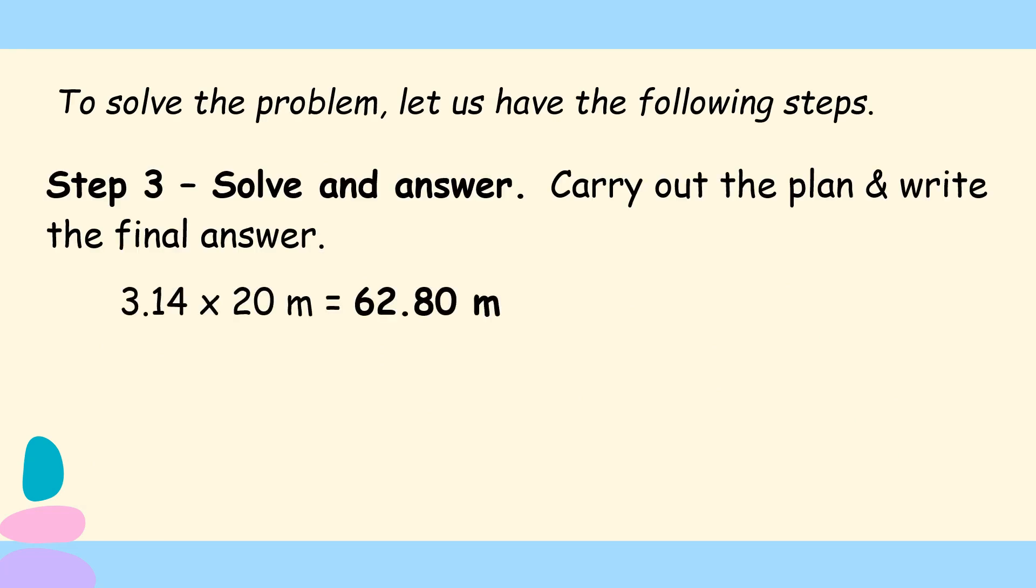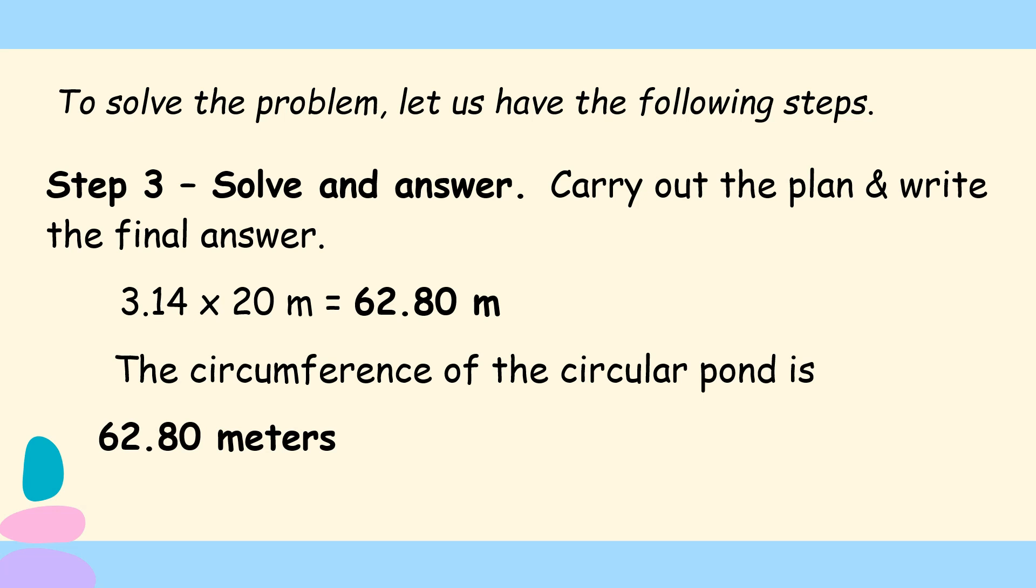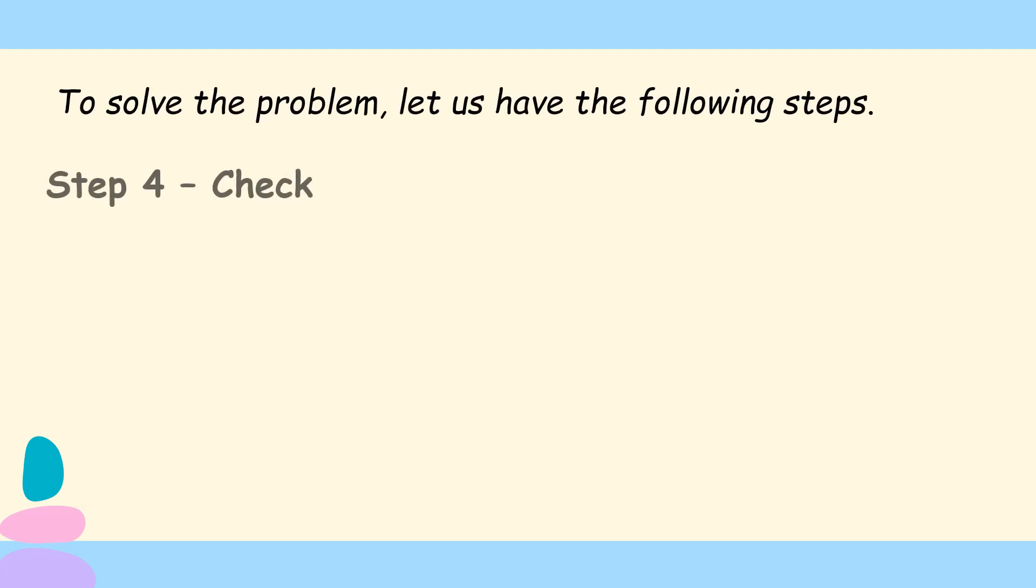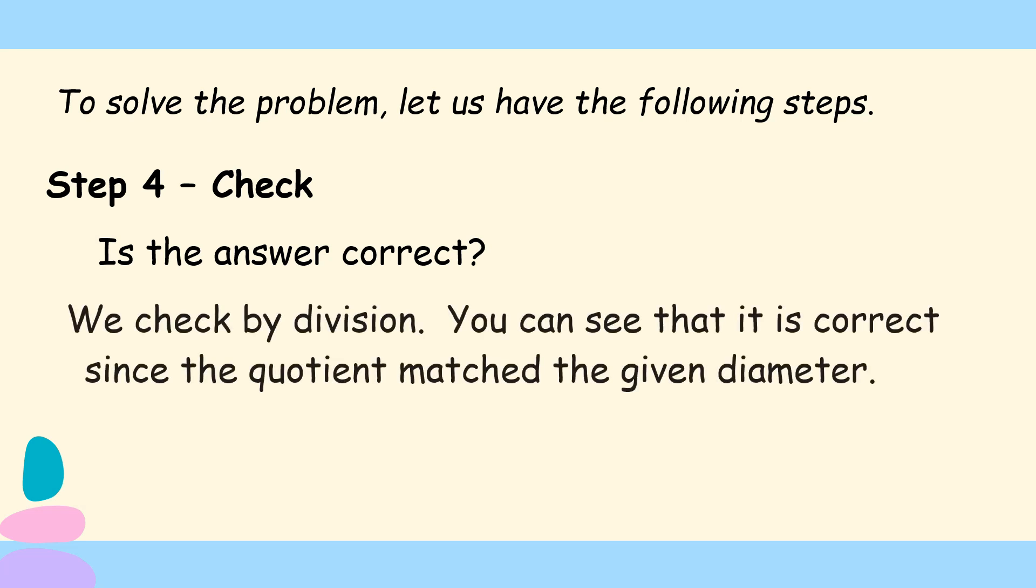So solve and answer, carry out the plan and write the final answer. 3.14 times 20 meters equals 62.80 meters. So meaning the circumference of the circular pond is 62.80 meters or 62 and 8 tenths meters. We can remove the 0 at the end. And step 4, let us check. Is the answer correct? So how do we know if our answer is correct? We check it by division. You can see that it is correct since the quotient matched the given diameter. As we all know, the counterpart of multiplication is division.